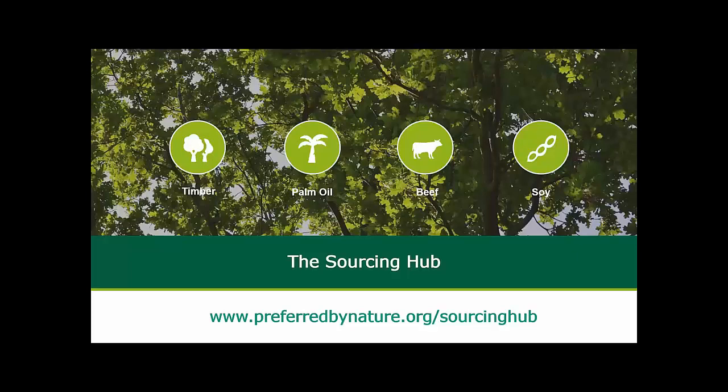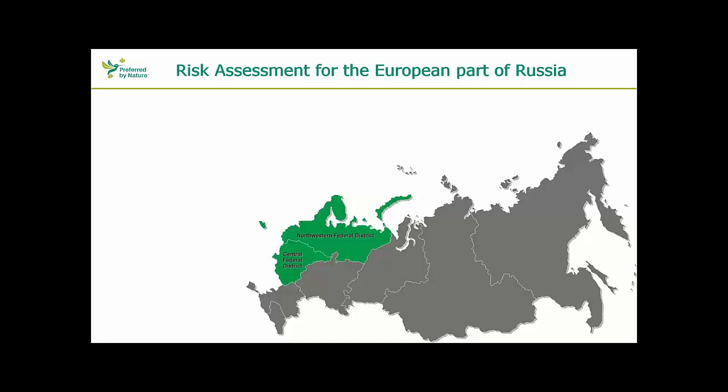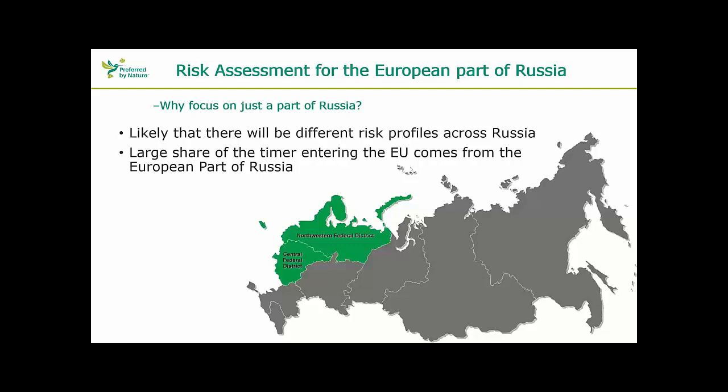Today's topic is the risk assessment for Ukraine and the European part of Russia. I'll introduce it quickly and then hand over to my colleague Michal Rai, who will present the Russian conclusions. You might ask why we focus on just part of Russia — we have a risk assessment for all of Russia from 2017, but found it very likely that there are differences in risk profiles across Russia, with the eastern and European parts having different scales of risk. The European part of Russia was our first regional risk assessment, as it's also where much of the timber entering the EU is coming from.